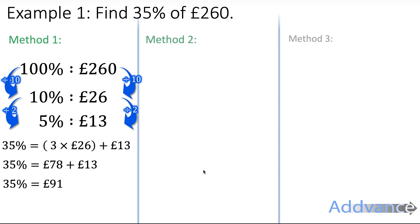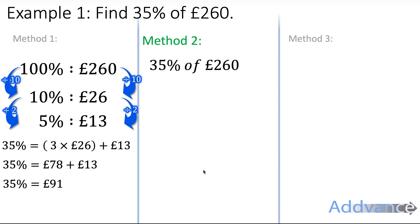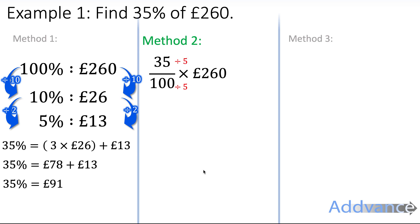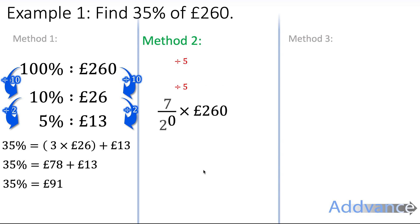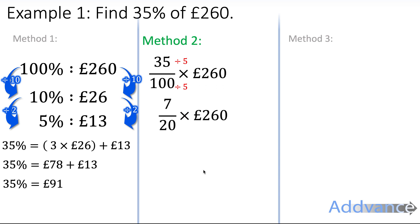The next method is thinking of it as a fraction. So 35% of 260 pounds is like 35 out of 100 times 260, because 35% is 35 out of 100. I simplify that fraction by dividing by 5, leaving me with 7 out of 20.